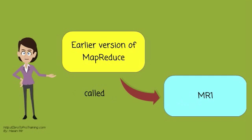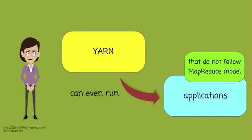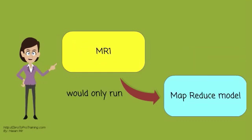The earlier version of MapReduce was called MR1. Yarn's execution model is more generic than the earlier MapReduce model. Yarn can even run applications that do not follow the MapReduce model. The original Apache Hadoop MapReduce model was not able to do so. It would only run MapReduce model.